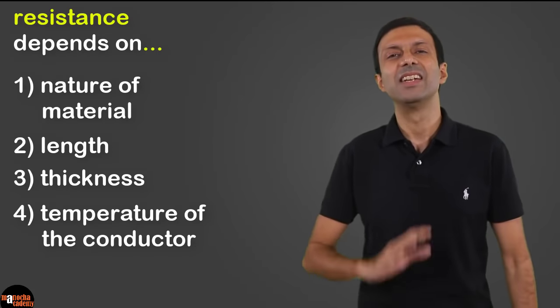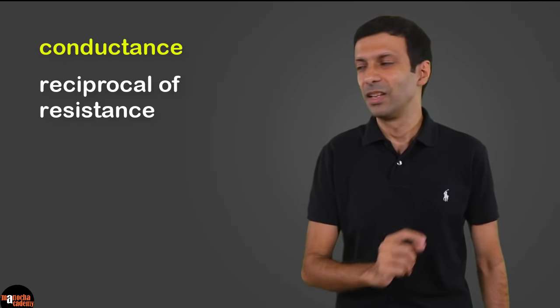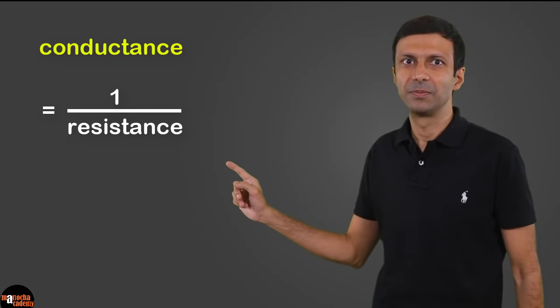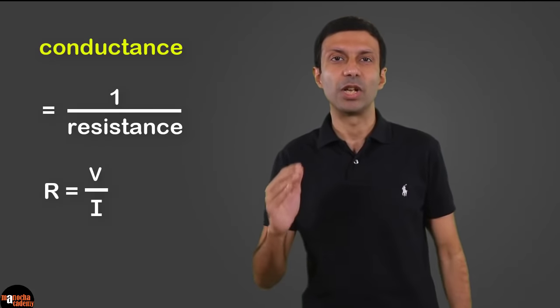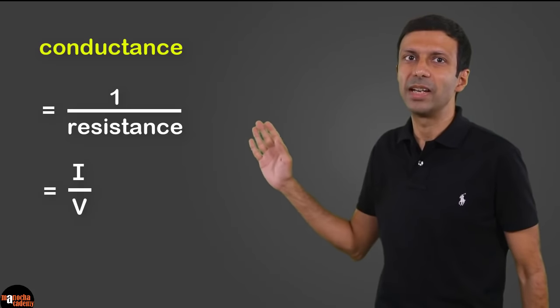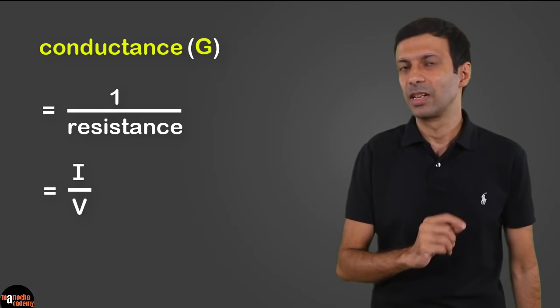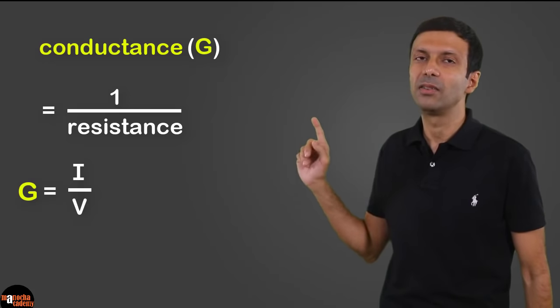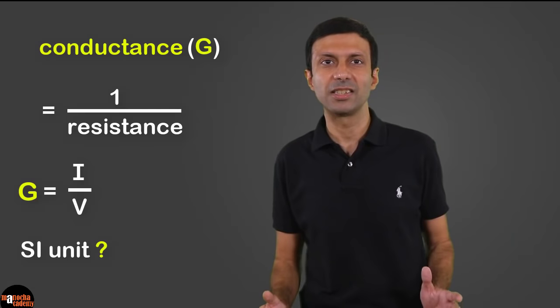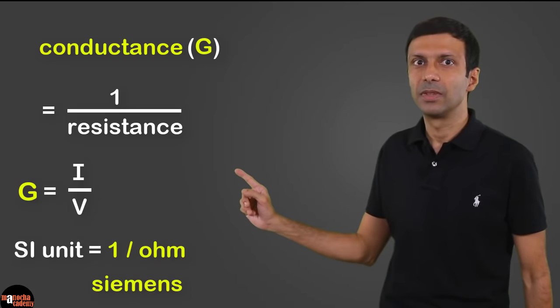Just like we have resistance of a conductor, there is another term called conductance. Conductance is the reciprocal of resistance, so conductance equals 1 divided by resistance. Since resistance is potential difference divided by electric current, conductance equals electric current divided by potential difference. The symbol G is used for conductance: G equals I divided by V. The SI unit of conductance is 1 per ohm, which is called Siemens, denoted by the symbol S.